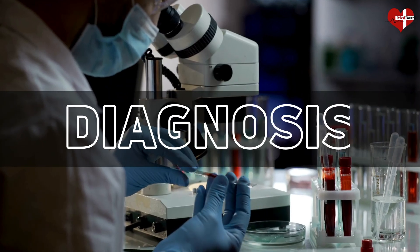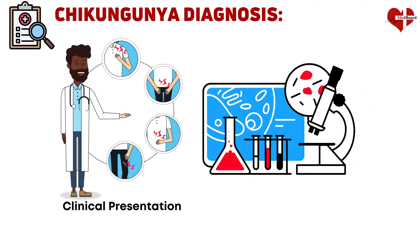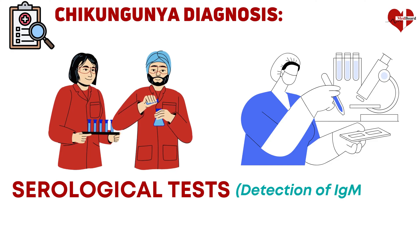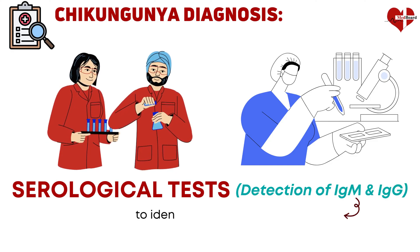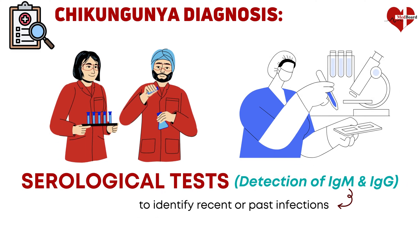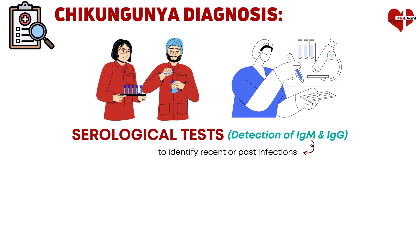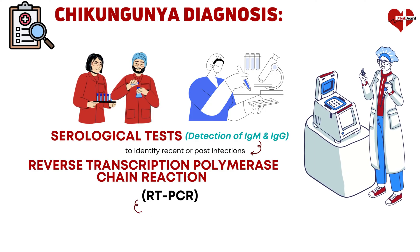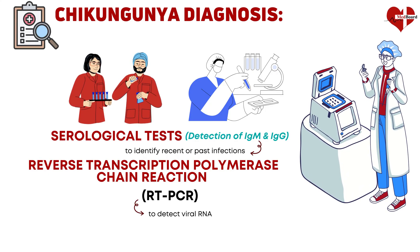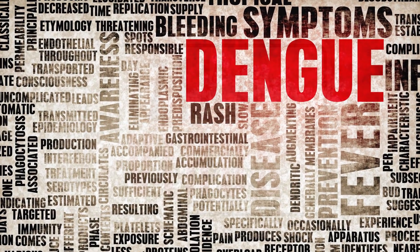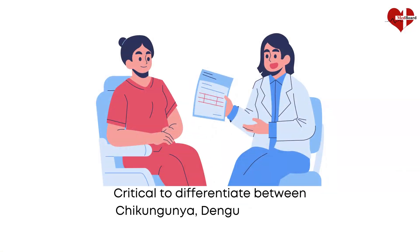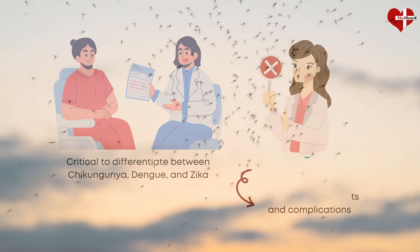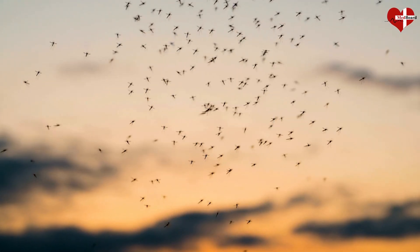Diagnosis of Chikungunya is based on clinical presentation and confirmed through laboratory testing. Serological tests, including the detection of IgM and IgG antibodies, are commonly used to identify recent or past infections. However, during the acute phase of infection, reverse transcription polymerase chain reaction (RT-PCR) is the preferred diagnostic tool to detect viral RNA. Given the similarities between Chikungunya, Dengue, and Zika, it is critical to differentiate between these diseases, as misdiagnosis can lead to ineffective treatments and complications, particularly in areas where multiple arboviruses are circulating simultaneously.